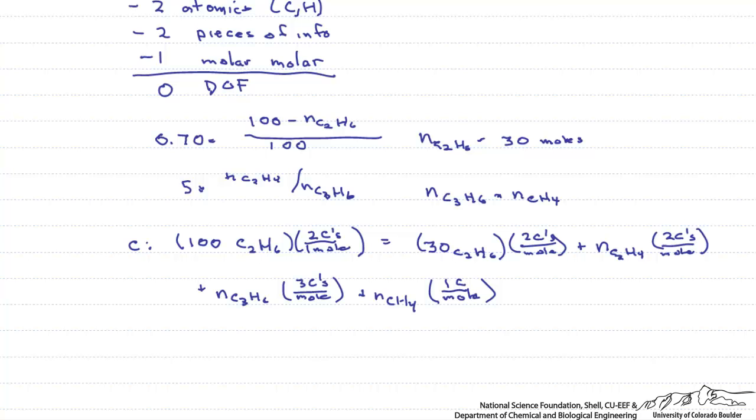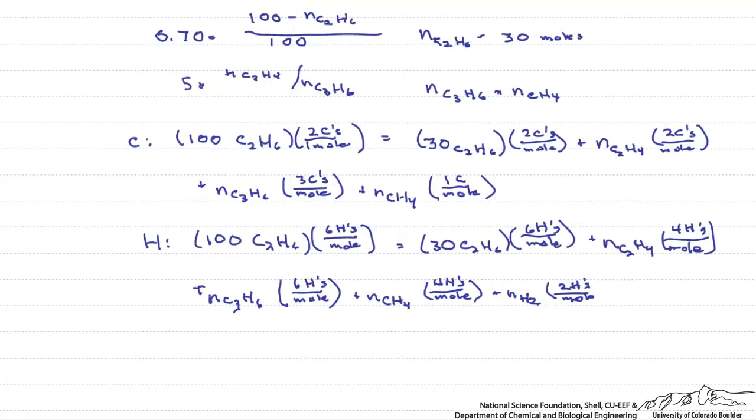The next atomic species that we'll do is the hydrogen balance. And we do it exactly the same way. So we have our five unknowns, and we have one, two, three, four, five equations. Five equations, five unknowns, we can solve this problem.